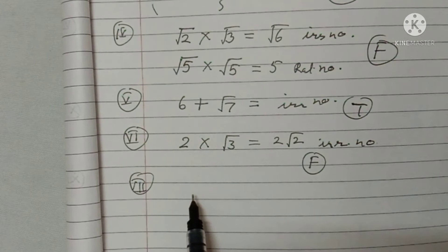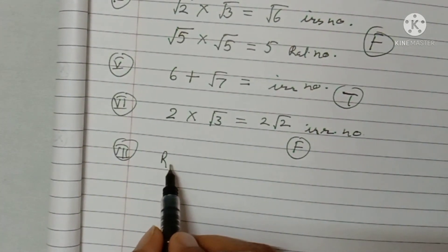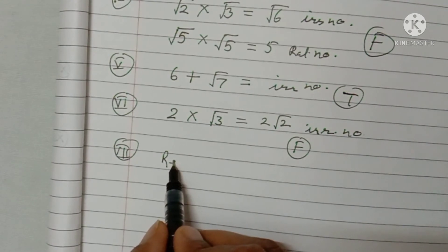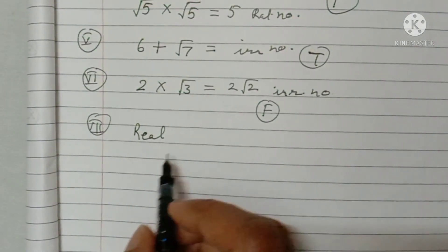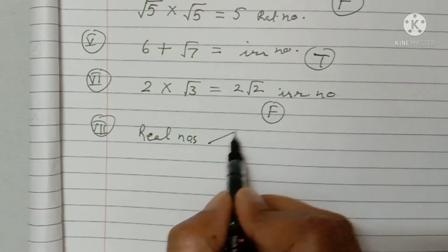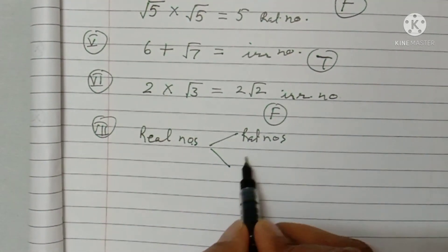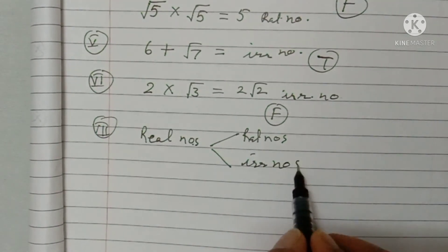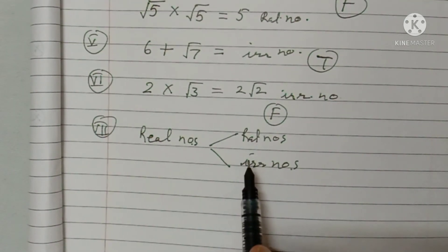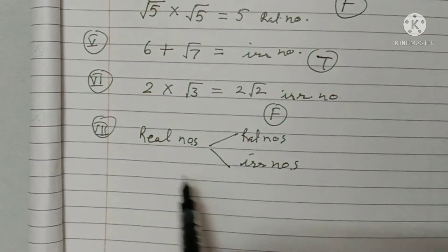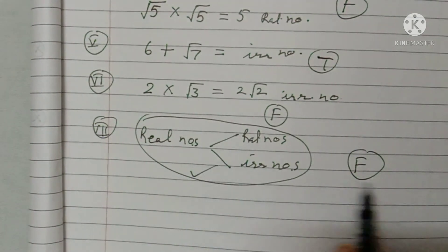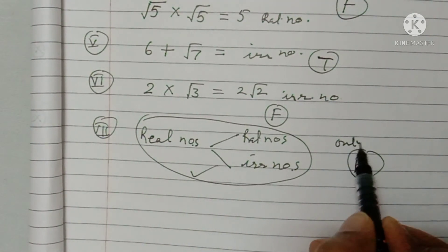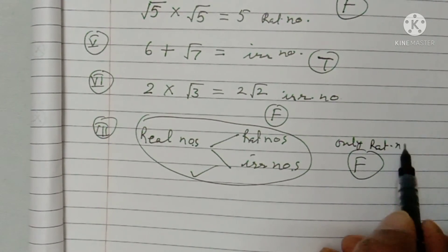Part seven: every real number is rational. As I explained in my video about real numbers, all rational numbers and irrational numbers together make real numbers. So the statement that every real number is rational is false — real numbers include both rational and irrational numbers.